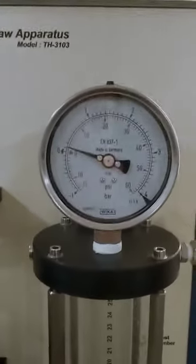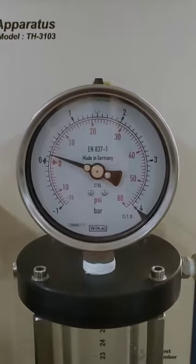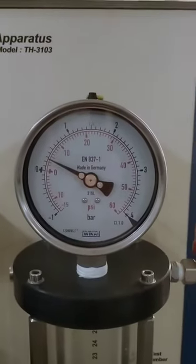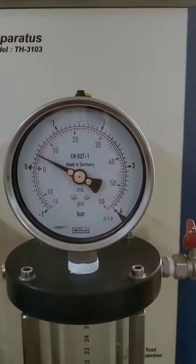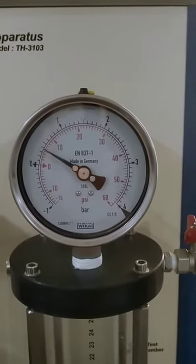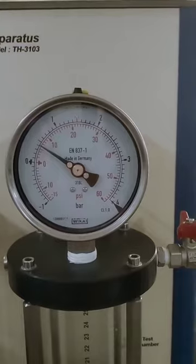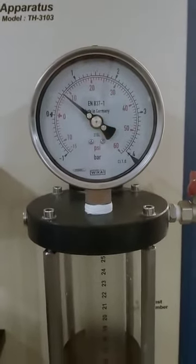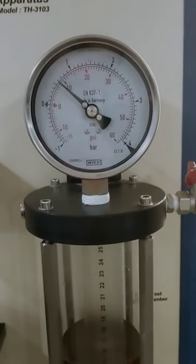You can see the dial gauge or the pressure gauge where the needle shows you the pressure. As the amount of fluid increases, the air is compressed and the needle moves. Now what we will do is simply take the reading from the pressure gauge.